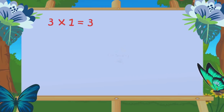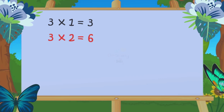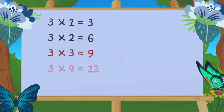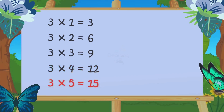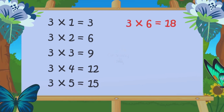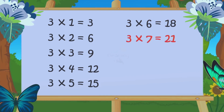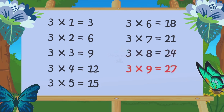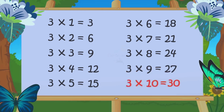3 1s are 3, 3 2s are 6, 3 3s are 9, 3 4s are 12, 3 5s are 15, 3 6s are 18, 3 7s are 21, 3 8s are 24, 3 9s are 27, 3 10s are 30.